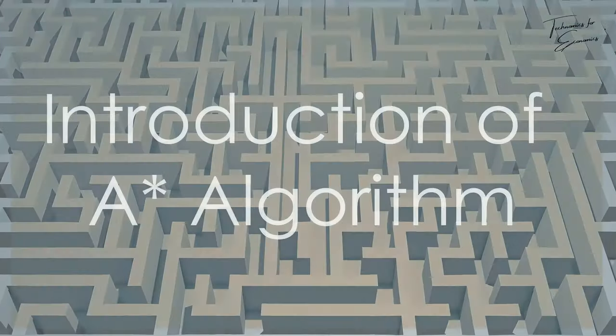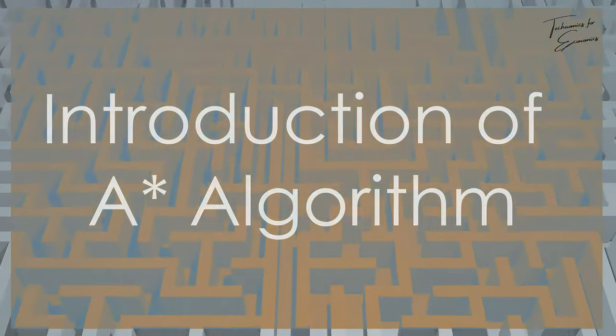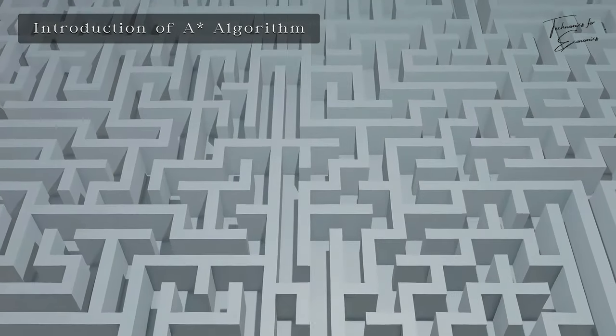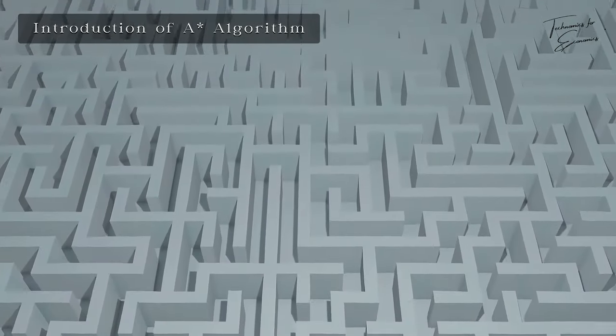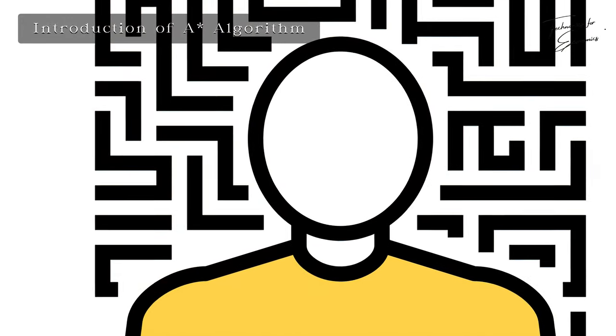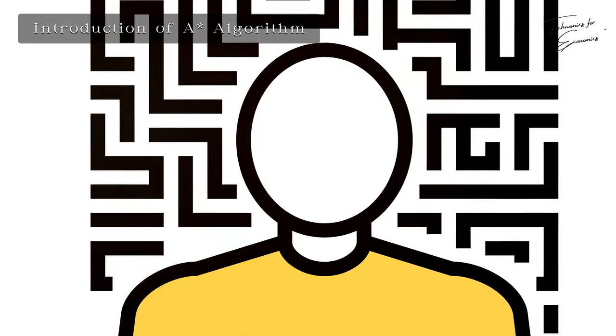The A* algorithm is a powerful pathfinding and graph traversal technique used in many applications, from video games to robotics. It combines the strengths of Dijkstra's algorithm and a heuristic approach to efficiently find the shortest path.